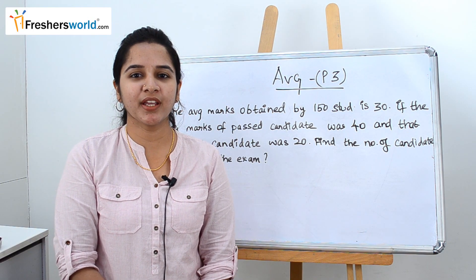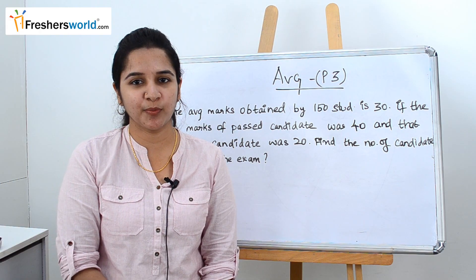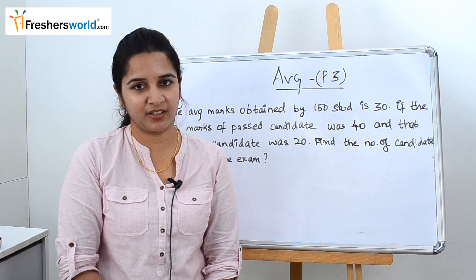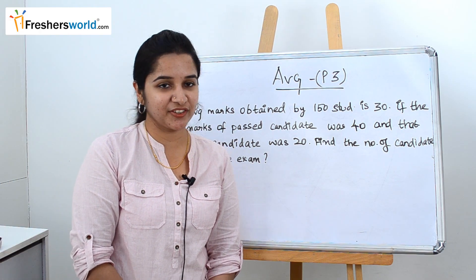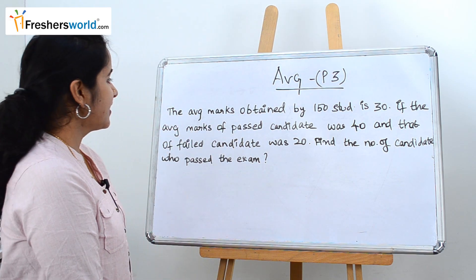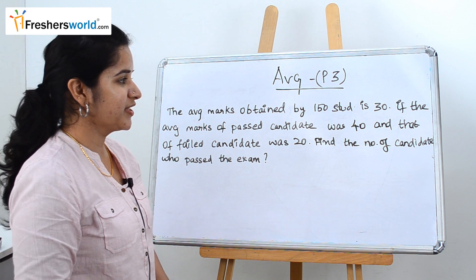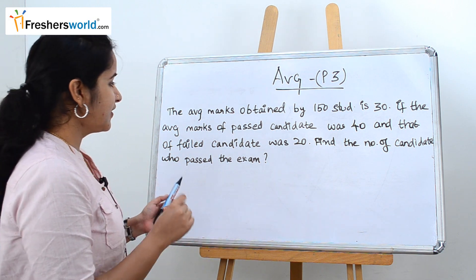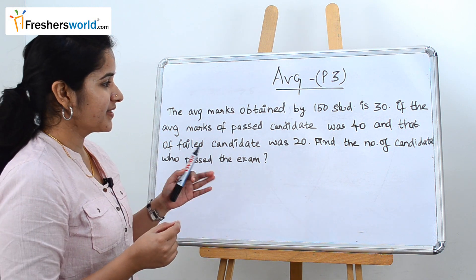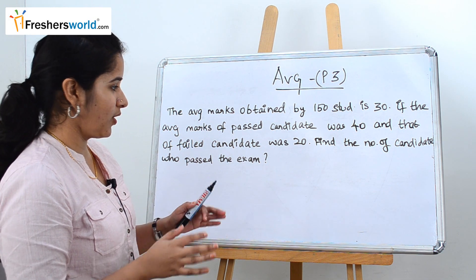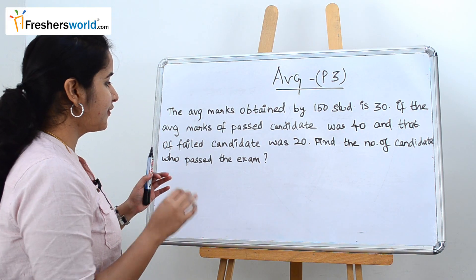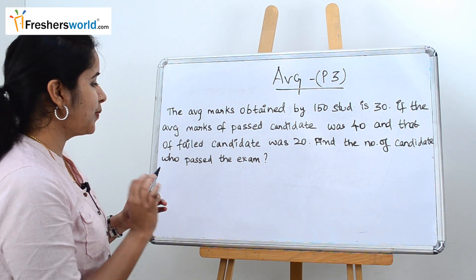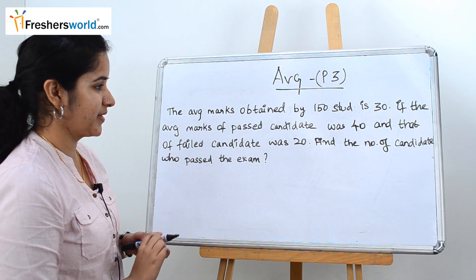From now on we will be going into much tougher problems to understand the overall concept better. The first question is: the average marks obtained by 150 students is 30. If the average marks of the passed candidate was 40 and that of the failed candidate was 20, find the number of candidates who passed their exams.